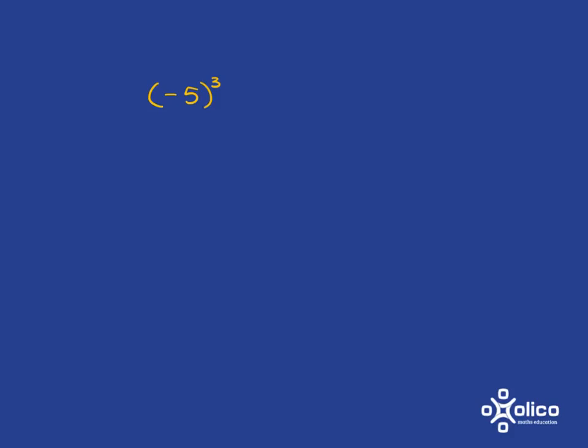OK, try this one for yourself — pause the video and try it for yourself. Did you get that this is negative five multiplied by negative five multiplied by negative five? Negative times negative is positive, then positive times negative is negative. So you've got negative 125.